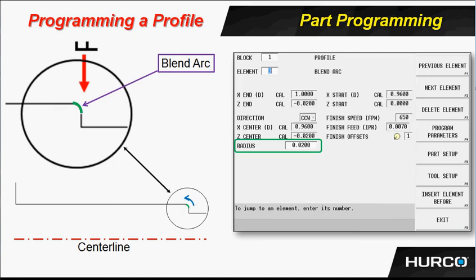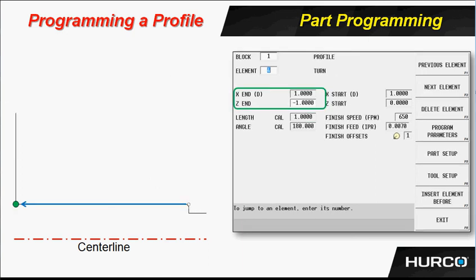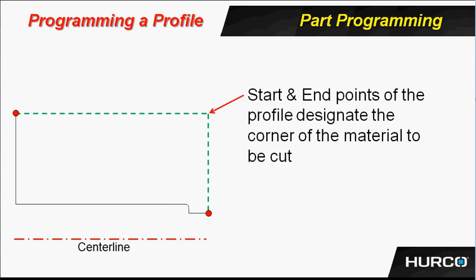I'm going to put a blend arc in of twenty thousandths. Then I'm going to do another turn, which takes me to my final depth of a negative one inch, and the final face to two inches and ten thousandths. Remember that wherever I pull off to, the starting point and the ending point is what's going to determine where the material is. So if I were to have pulled off to two inches and a hundred thousandths, and I only had a thirty thousandths depth of cut, then the control is going to say two inches and one hundred thousandths is where we're going to start roughing — I'll drop down thirty thousandths for my first pass, and I'm going to cut a couple of passes of air. So where you pull off is very important. The start and end points of the profile designate the corner of the material to be cut; that's how the control knows where to begin the roughing.